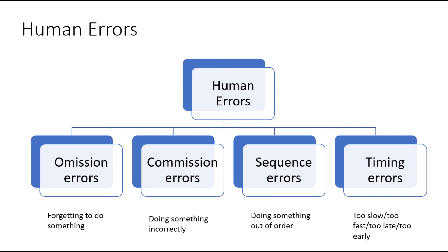Whenever we stumble upon human errors, we can classify these further into four categories. Either an error is an omission error — meaning somebody forgot to do something — or a commission error, meaning somebody did the task but did it incorrectly. The third is a sequence error, when somebody messed up the sequence. Or it could be a timing error, meaning the task was performed too slow, too fast, too early, or too late.